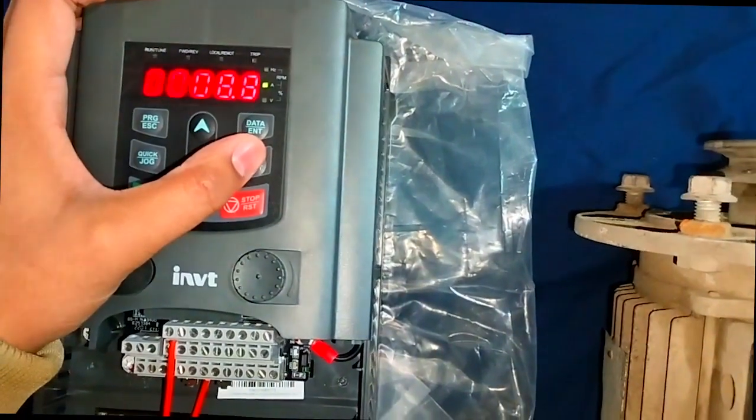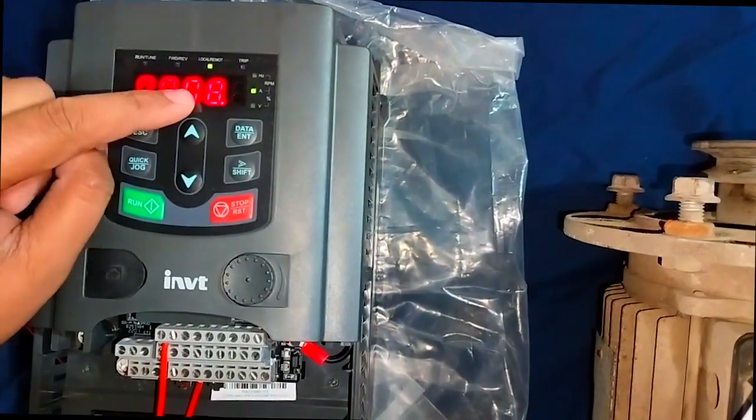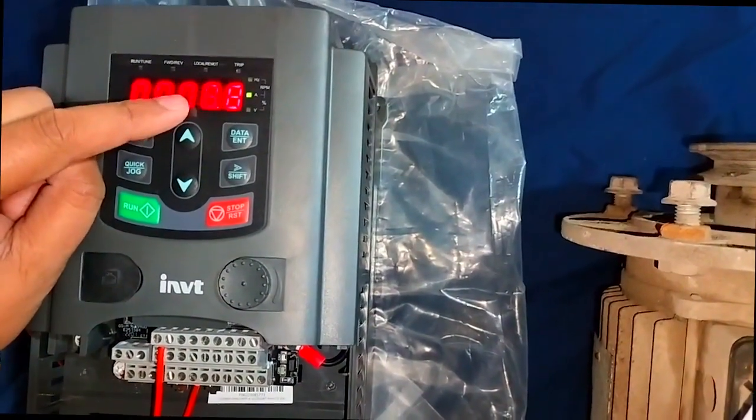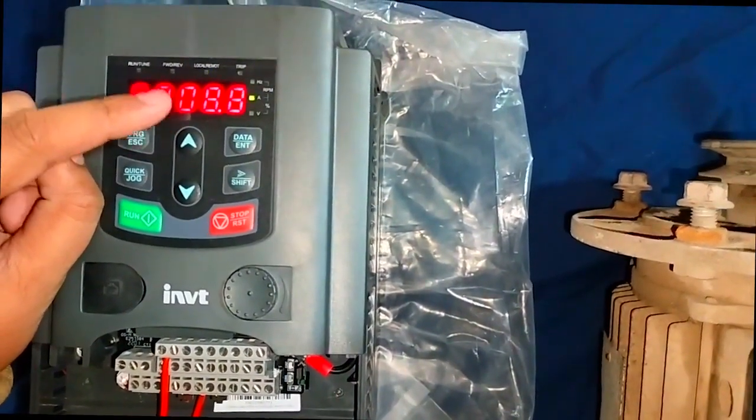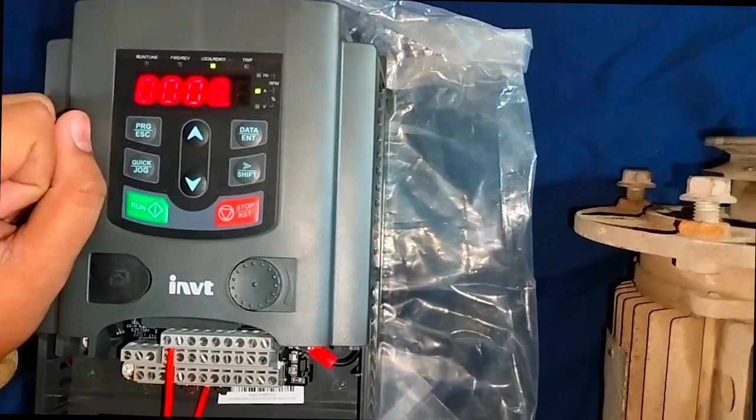We have to install the voltage which we use from the motor. This is the method to add nameplate data in the GD200.